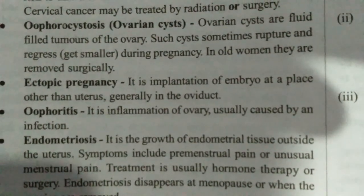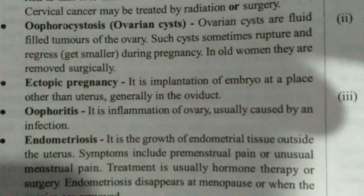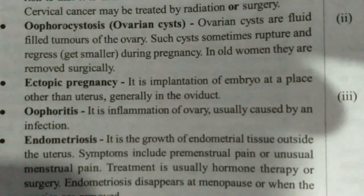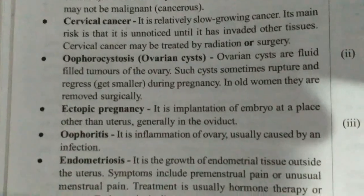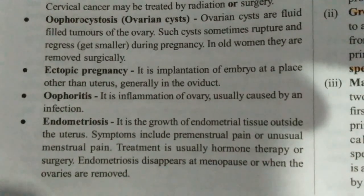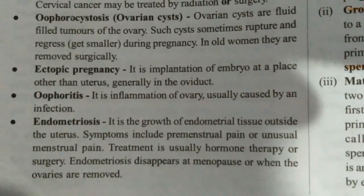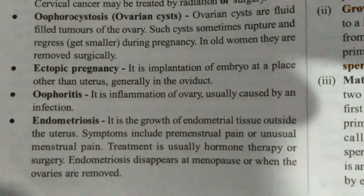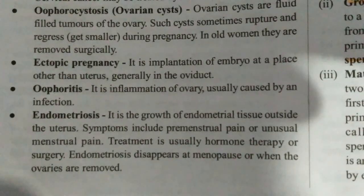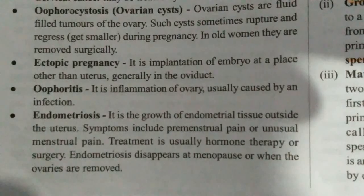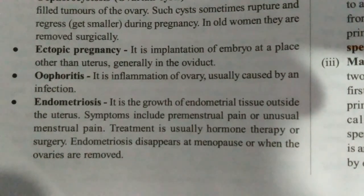Now there is ectopic pregnancy. In normal conditions, the zygote gets implanted in the blastocyst stage in the uterus. But in ectopic pregnancy, it gets implanted somewhere other than the uterus — for example, in the oviduct. This type of pregnancy is not normal and is known as ectopic pregnancy.